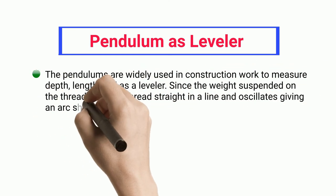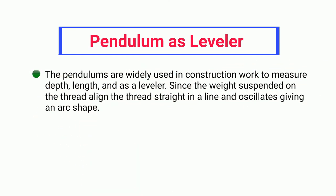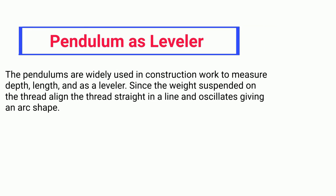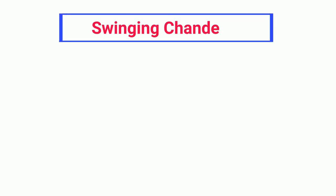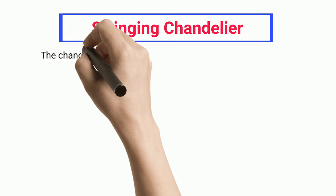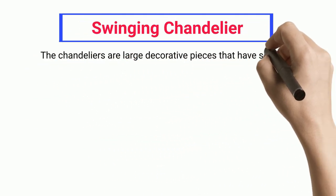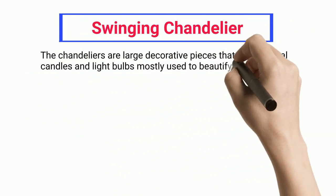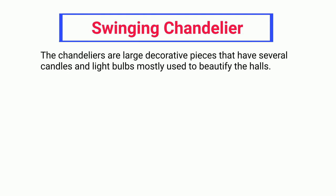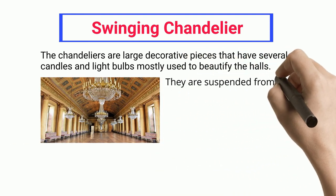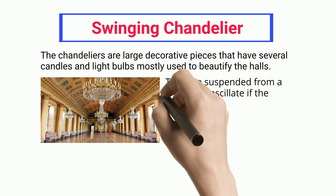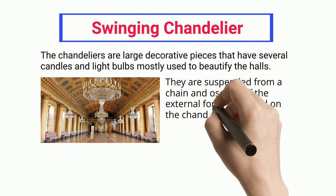Swinging Chandelier: The chandeliers are large decorative pieces that have several candles and light bulbs, mostly used to beautify the halls. They are suspended from a chain and oscillate if external force is applied on the chandelier or due to strong wind blow.